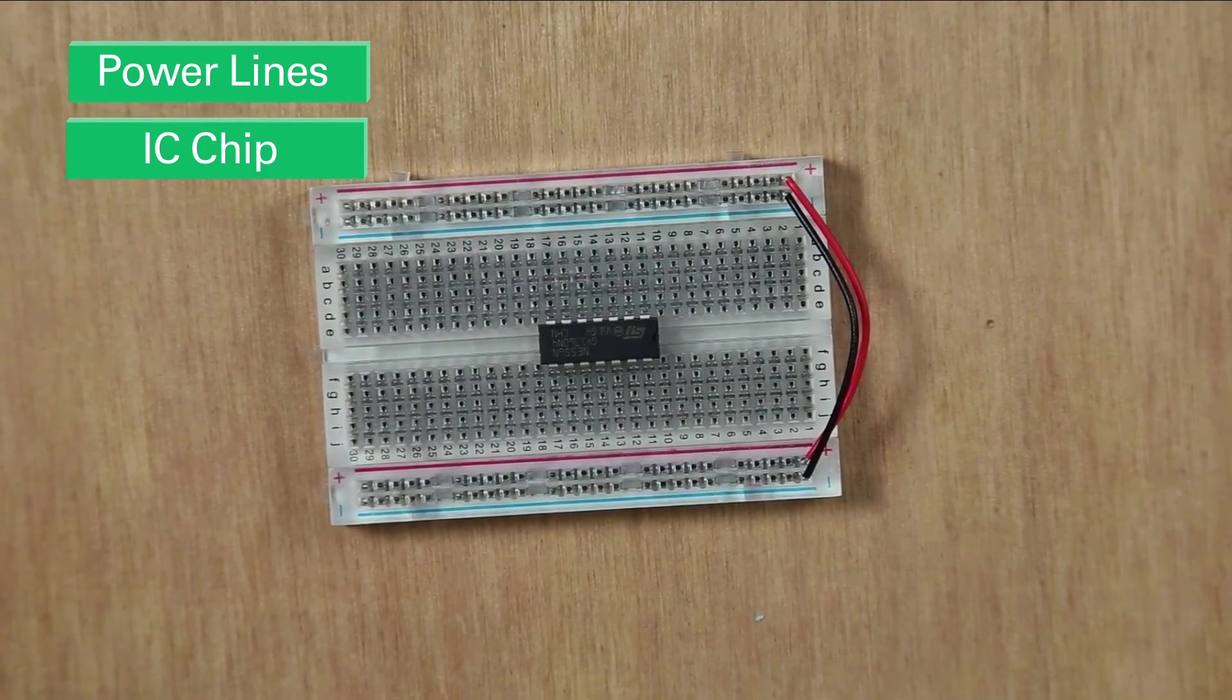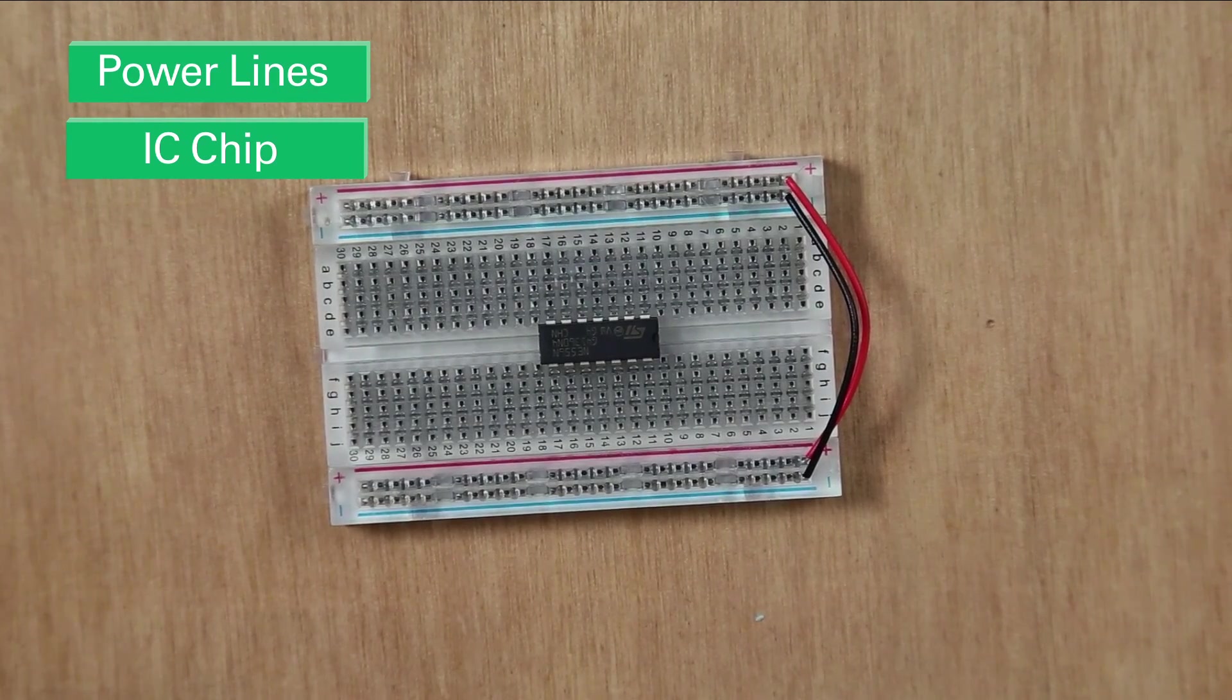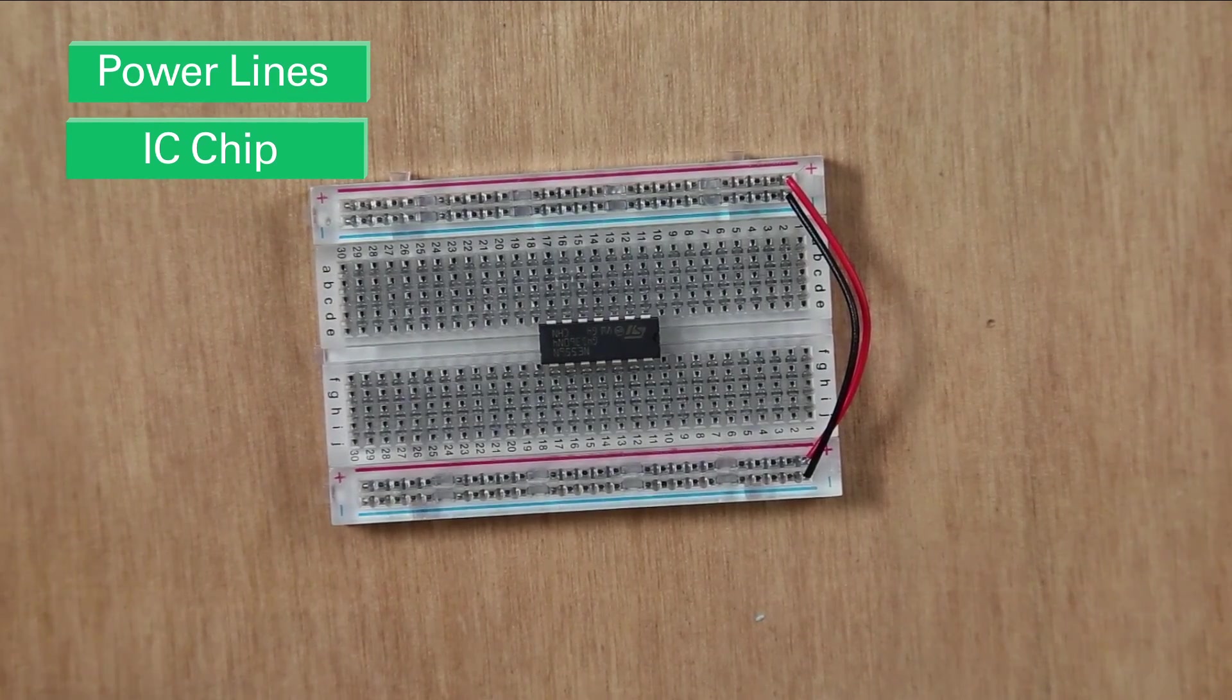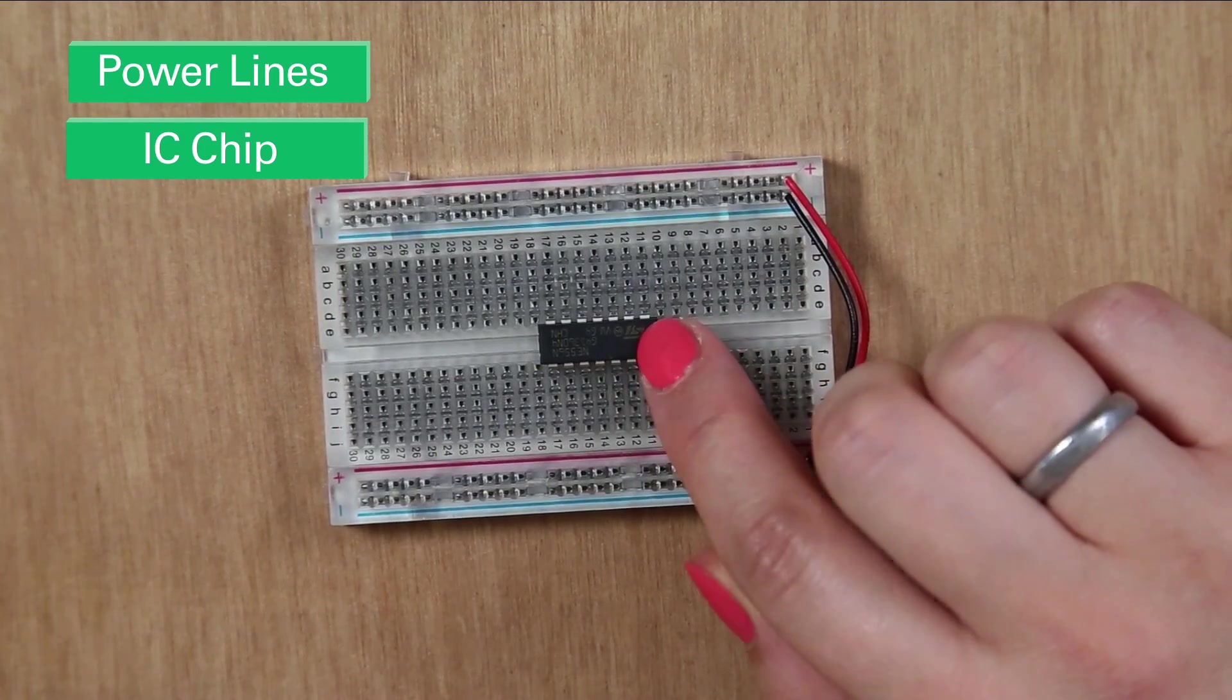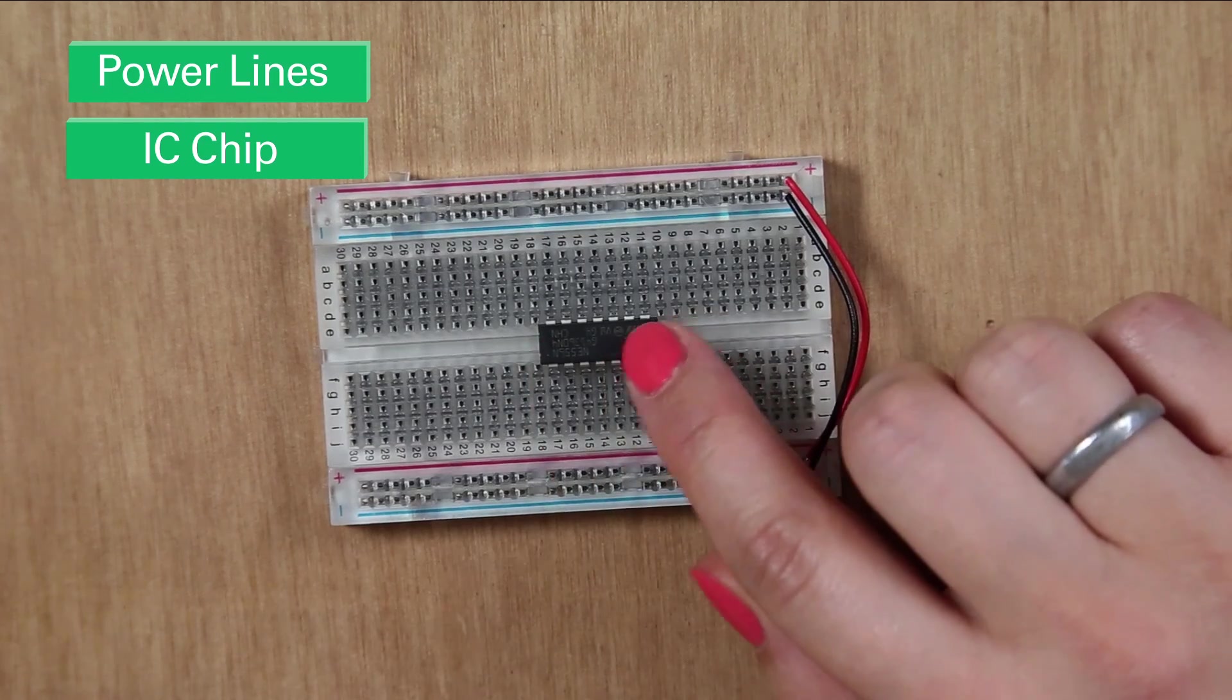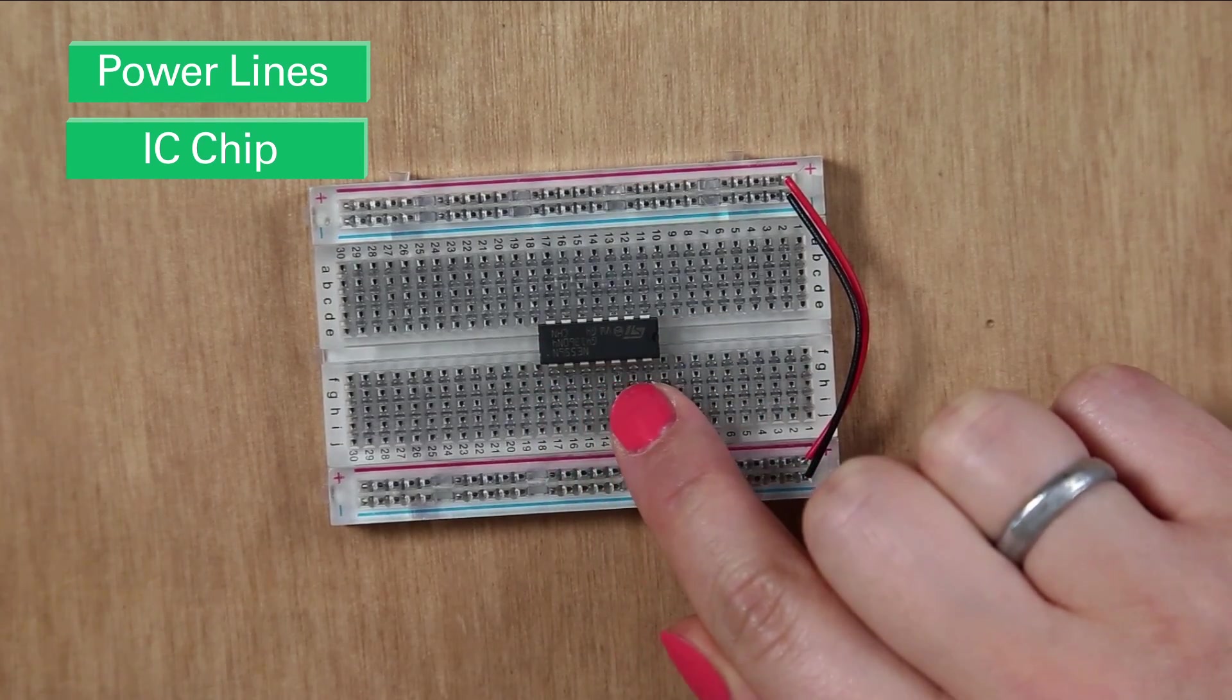And the next thing we do is we want to connect certain pins on the IC chip to the positive rail. So the way we count the pins on the IC chip is from left to right. So 1, 2, 3, 4, 5, 6, 7, 8, 9, 10, 11, 12, 13, 14.